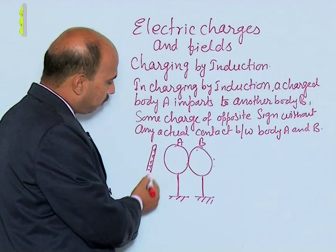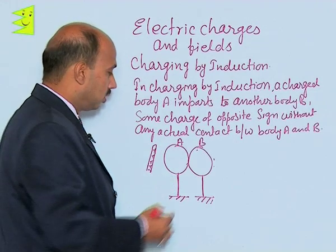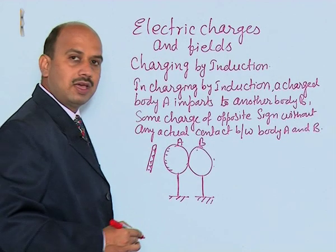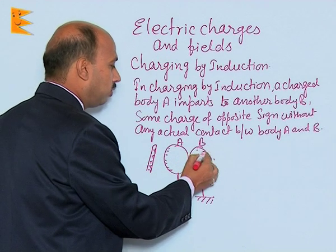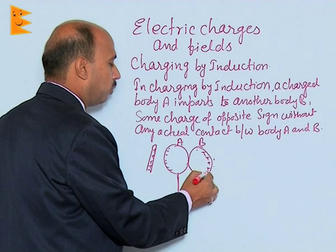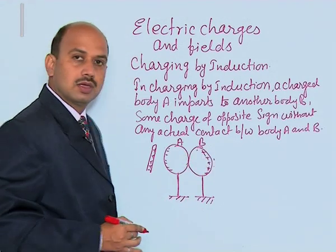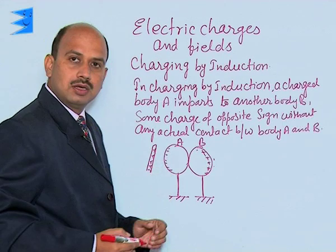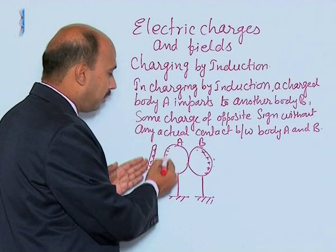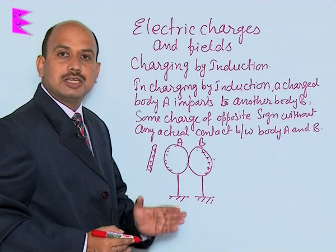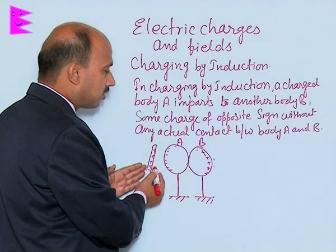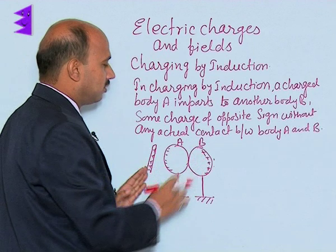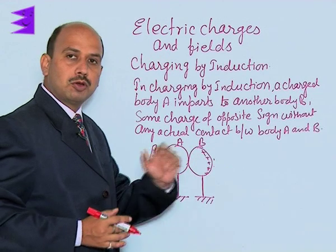Suppose there is a positively charged glass rod. When you bring this positively charged rod near, negative charges are induced to the nearer side and positive charges are induced to the opposite side. Not all the negative charges come here — the negative charges come until equilibrium is achieved. The negative charges come near to the positive rod and the positive charges move away from the positive rod.